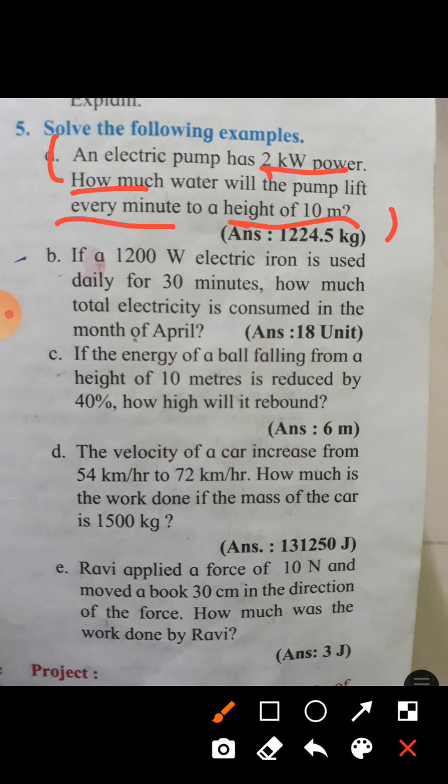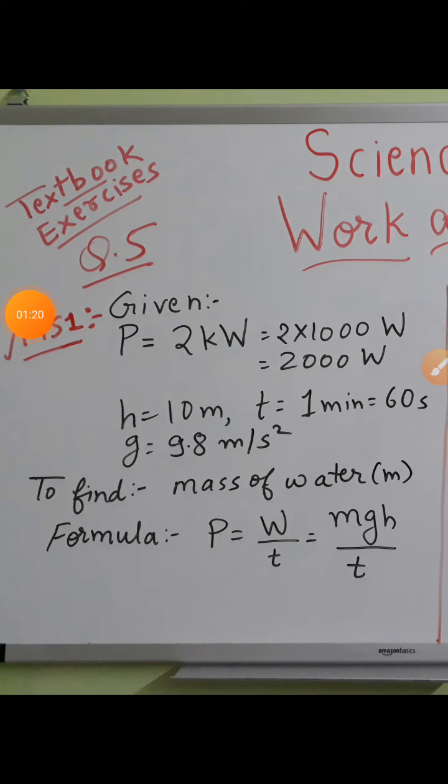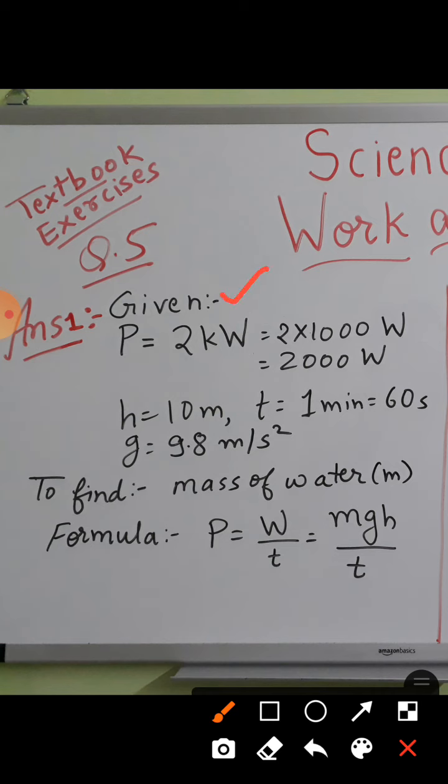Let us see step by step what we have to do. First you have to write the given things. Power is given in kilowatts but everything should be in SI unit. SI unit of power is watt, so convert two kilowatts into watts. As one kilowatt equals thousand watts, therefore two kilowatts equals two thousand watts.